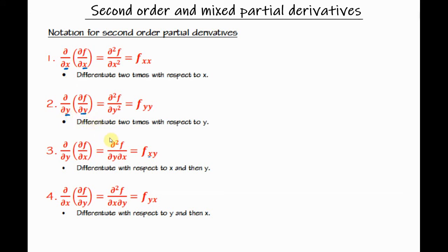Given the same function, there is also an option for mixed second order partial derivatives. As per the notation, it tells us to find the partial derivative with respect to x and then with respect to y in that order. Looking at this notation, we work from right to left — so we take the partial derivative with respect to x first and then with respect to y second.